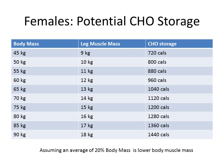For females, muscle mass in the lower legs is slightly less — about 20% compared to 21% for males. The storage is significantly smaller for females, primarily because females are generally going to weigh a little bit less than males. Take a look at the chart and see where you're at.